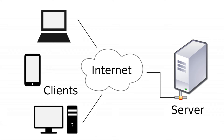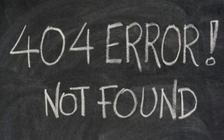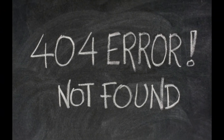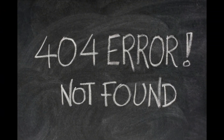Every website present on the internet has its own server. You can only visit a website if there is some server sending your browser the web page you want to visit. If the server is down, you cannot access the website. Now the server doesn't have only one web page on it — there are a number of web pages on a single server. Like Facebook has thousands of web pages present in different directories or folders on the server. The server will send you the response only if that page exists on it. If you send a request for a page which has been deleted or moved from the server, it will respond with an error — and that error is called error 404.